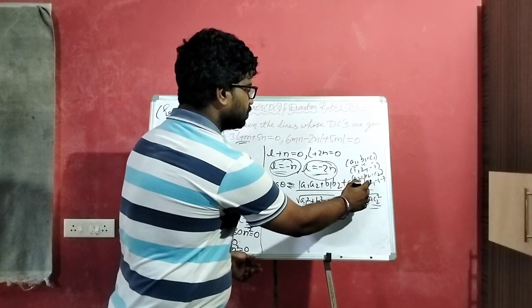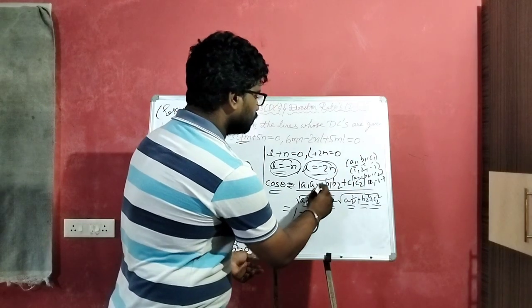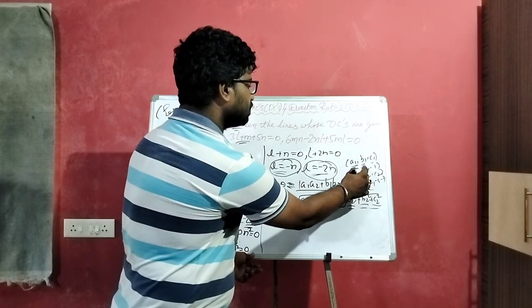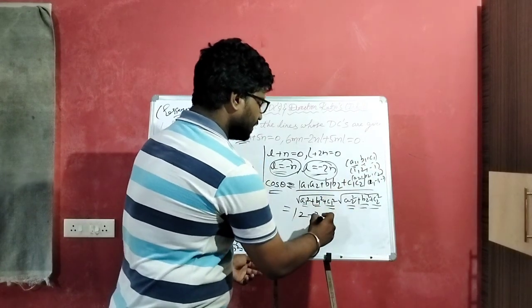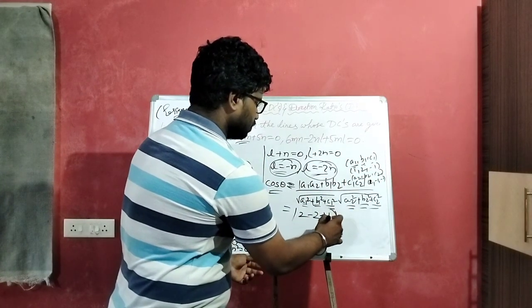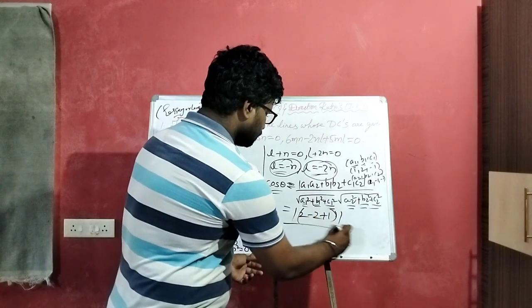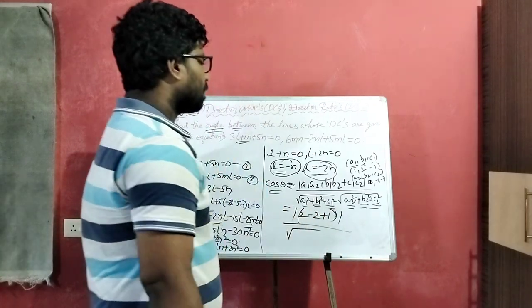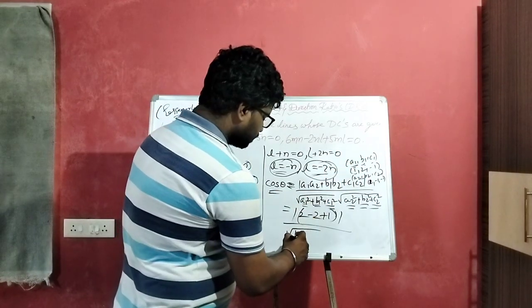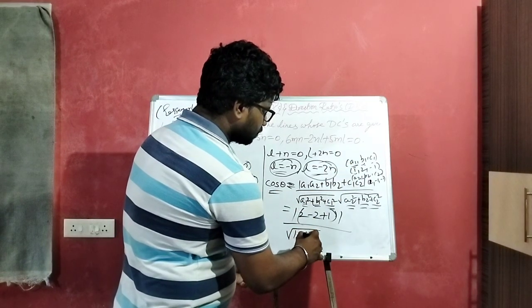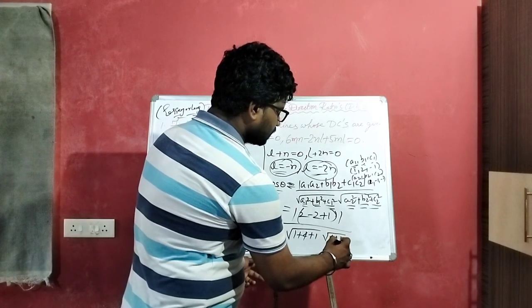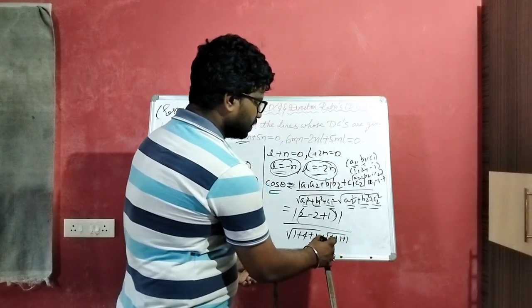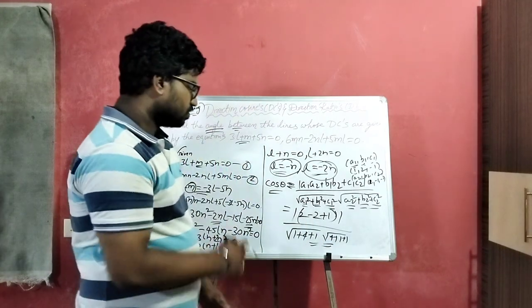A1 times a2 is 1 times 2 is 2, and b1b2 is 2 times minus 1 is minus 2, and c1c2 is minus 1 times minus 1 plus 1, divided by root over a1 square is 1 plus 4 plus 1, similar to a2 square plus 4 plus 1 plus 1